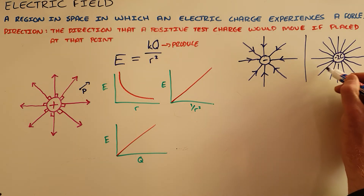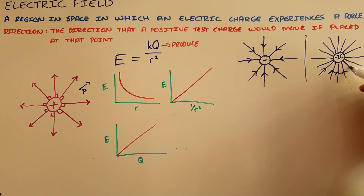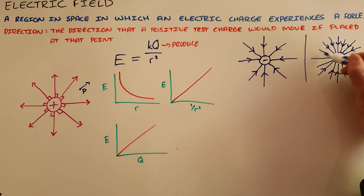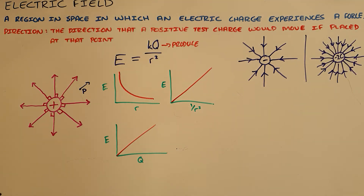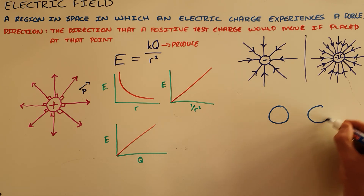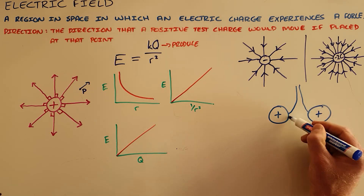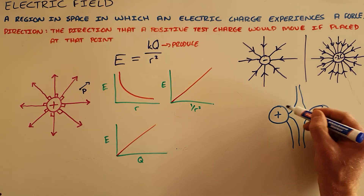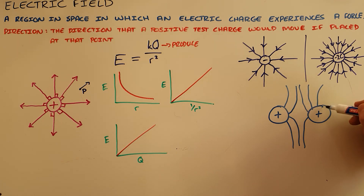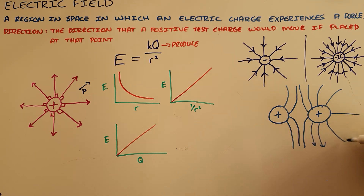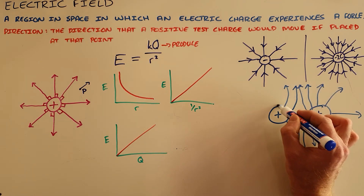A stronger or bigger charge results in a stronger electric field. It is important to draw arrows on every field line, as each must have a direction. Between two like charges — two positively charged objects — the field lines essentially repel each other. It is very important that these field lines never cross or touch, and all field lines must have the necessary arrows to indicate the direction of the field at that specific point.